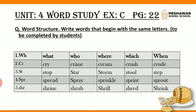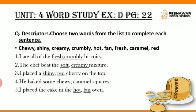Then Exercise C is also very easy — word structure. You have to do it by yourself, students. Words are given and you have to make new words that begin with those letters. For example, number one is WH, so I have made: what, who, where, which, when. Then Exercise D, descriptors — a similar exercise as in unit number one. Choose any two words from the list to complete each blank. For example: 'I ate all of the fresh crumbly biscuits.' 'The chef beat the soft creamy mixture.' 'I placed a shiny red cherry on the top.' 'He baked some chewy caramel squares.' 'I placed the cake in the hot fan oven.' You just have to select two descriptor words from the list and fill in the blanks.